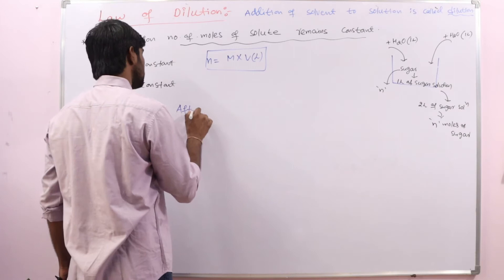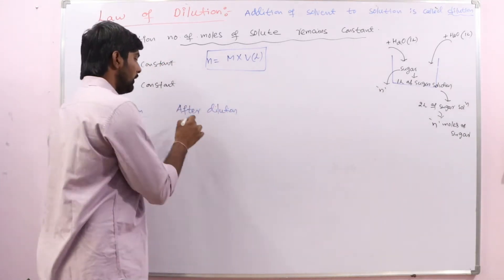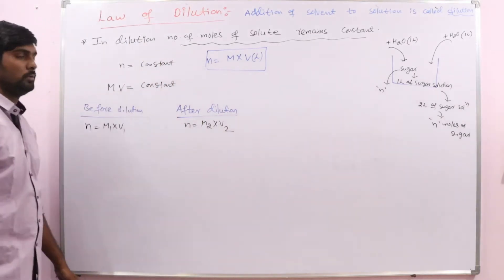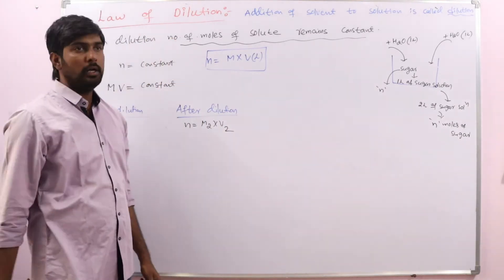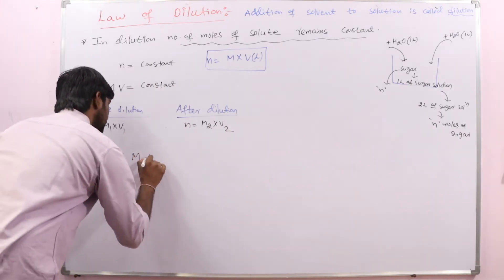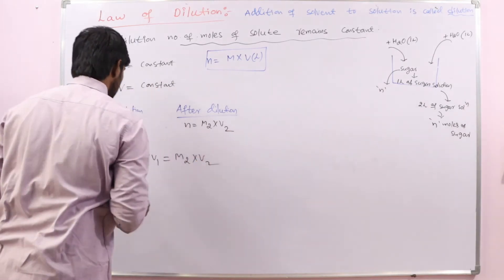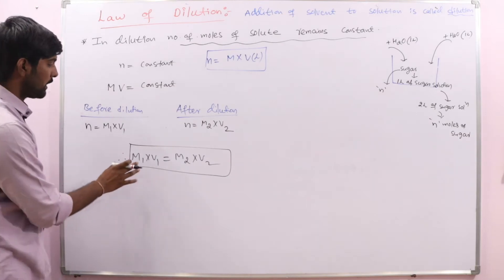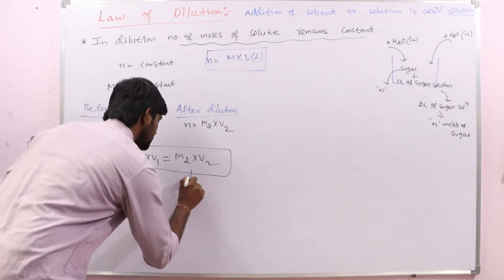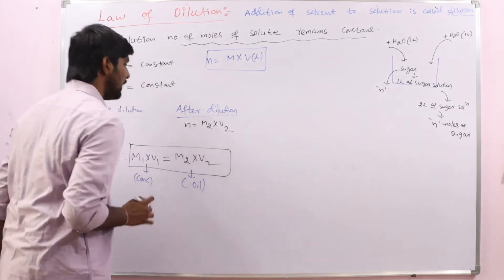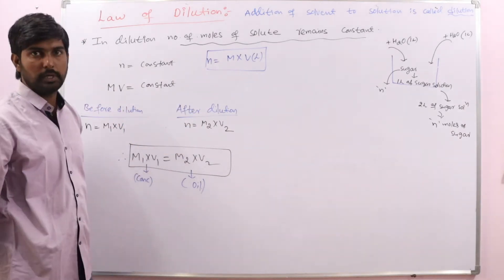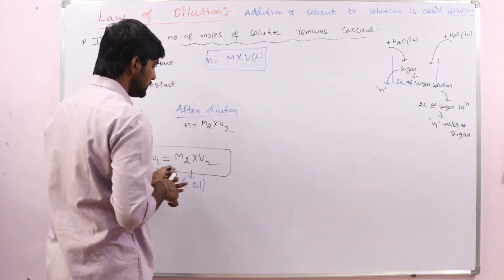And after dilution, number of moles of solute equals M2 × V2. But in the dilution process overall, the number of moles of solute remains constant, so we can write M1 × V1 = M2 × V2. M1V1 is for the concentrated solution, and M2V2 is for the dilute solution — after addition of solvent to the original solution. So this is the law of dilution: M1V1 = M2V2.